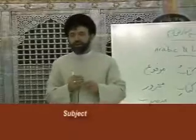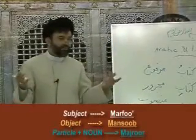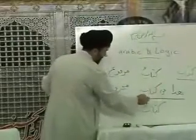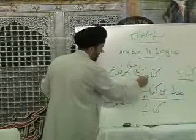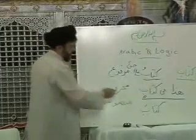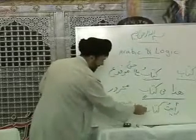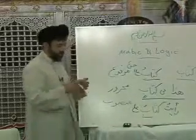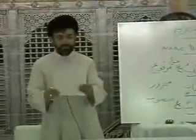So the three rules are: kullu fa'ilin marfoo', kullu mafoolin mansoob, wa kullu harfin ba'da al-jar majroor. For example: 'hadha fi kitabi' — kitab after fi becomes majroor. 'Kitab-u Aliyyin hasanun' — kitab is the subject, so marfoo'. 'Ra'aytu kitab-a Aliyyin' — kitab here is mafool or object, so it becomes mansoob. Any questions?